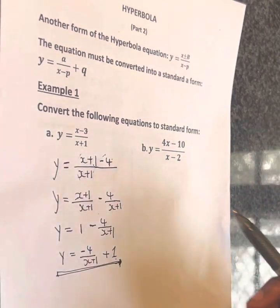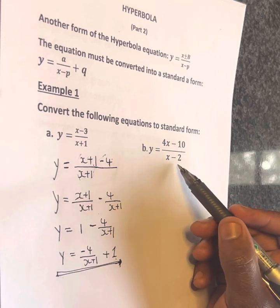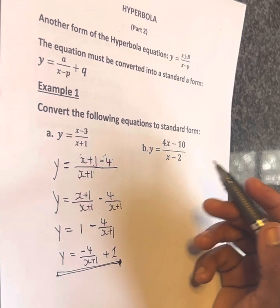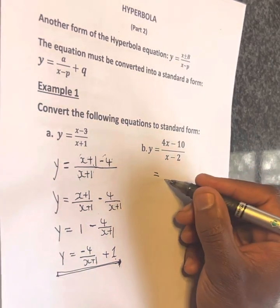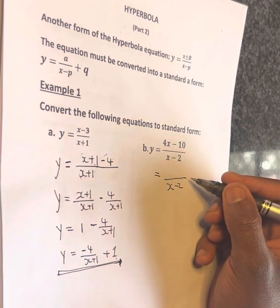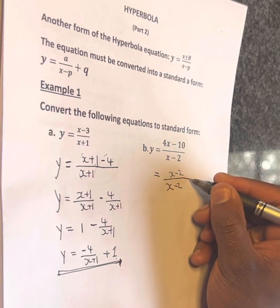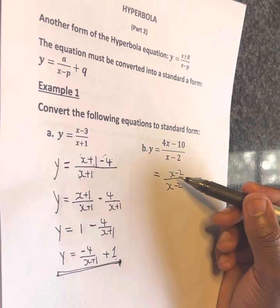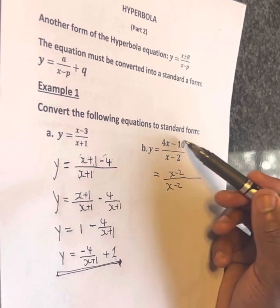For the next example, 4x minus 10 over x minus 2. I want to repeat the same process, so x minus 2 appears in the denominator.